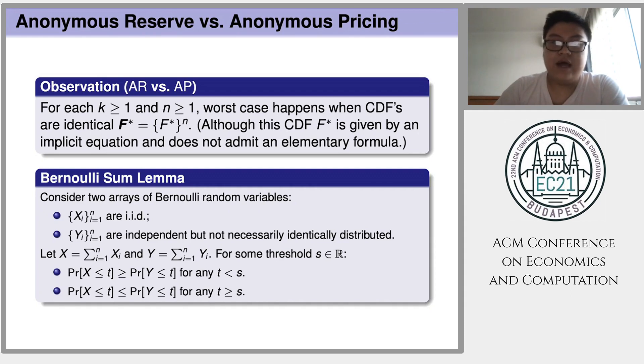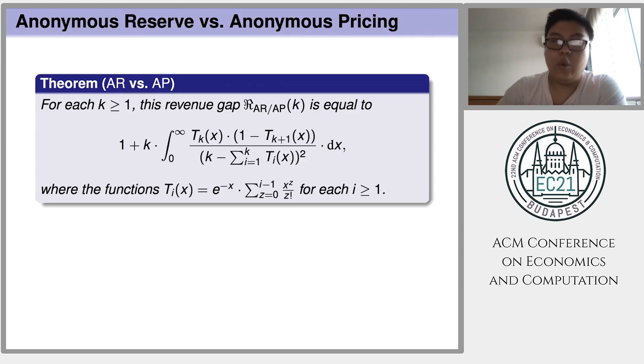Based on the above observation, the worst case happens when the value distributions are identical. We are able to prove that we actually write down a closed form formula for the largest possible ratio.